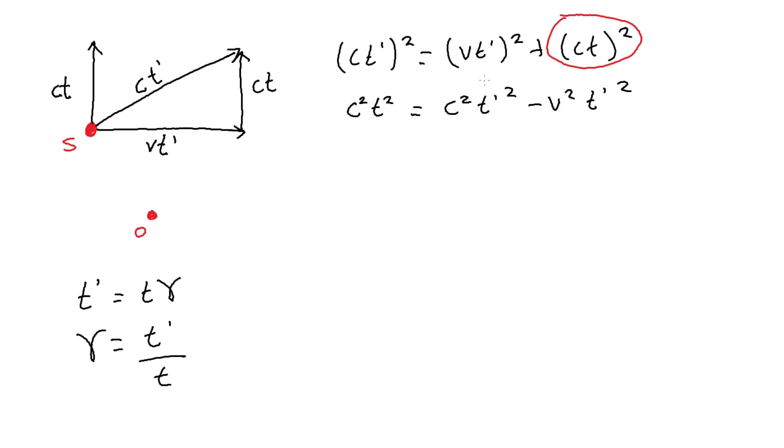And we can see this common factor of T prime squared, which we can factor out to give C squared T squared equals T prime squared times C squared minus V squared.